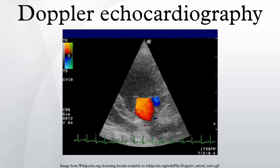There are two major methods of 2D velocity estimation using ultrasound: speckle tracking and cross-beam vector Doppler, which are based on measuring the time shifts and phase shifts respectively. Vector Doppler is a natural extension of the traditional 1D Doppler imaging based on phase shift.